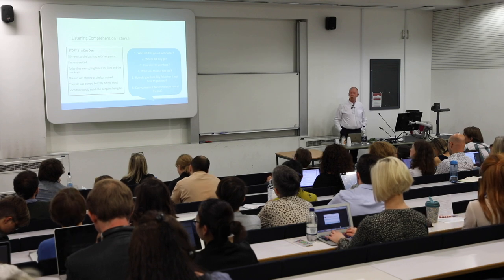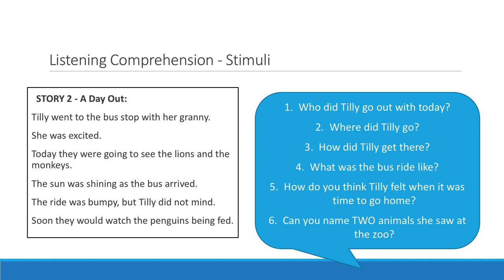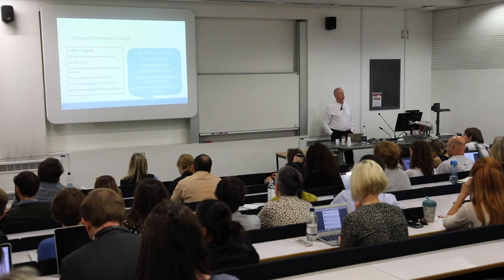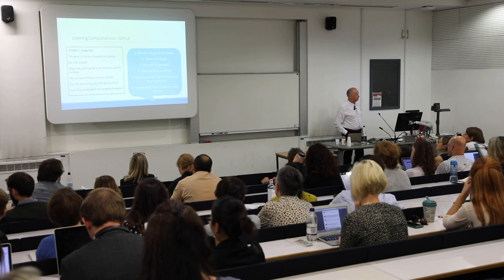Here's an example of one of the stories: 'Tilly went to the bus stop with her granny. She was excited. Today they were going to see the lions and the monkeys. The sun was shining as the bus arrived. The ride was bumpy but Tilly did not mind. Soon they would watch the penguins being fed.' The first question is a literal question: 'Who was she going out with?' — her granny. A second question, 'Where did Tilly go?', requires them to say she went to the zoo, but the word zoo is not actually mentioned in the passage.